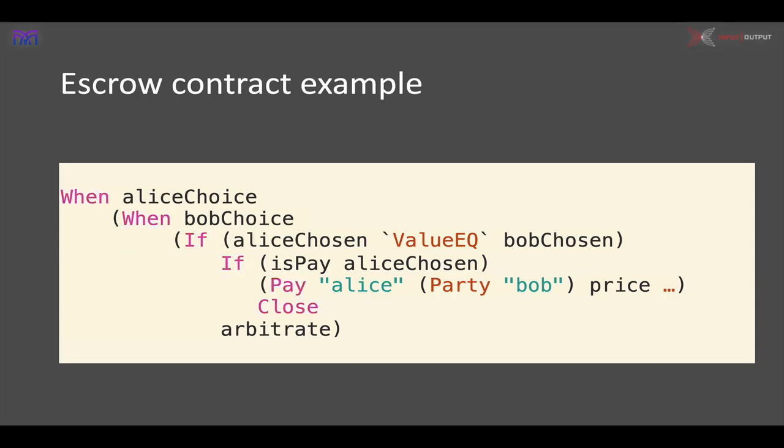Here we have our contract, and you can see the things illustrated in pink — these are the constituent parts, the combinators that the contract is made up of. With 'when' we wait for something to happen. With 'if' we check whether a particular condition holds: if it does we do one thing, if it doesn't we do something else. One of the things we often do is make a payment. And then we have a point where the contract is closed and any money left in the contract gets refunded to the people who originally put it in.